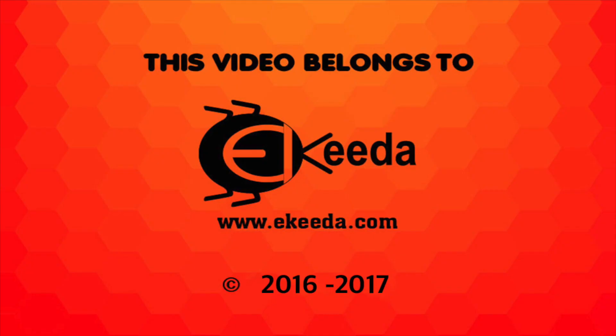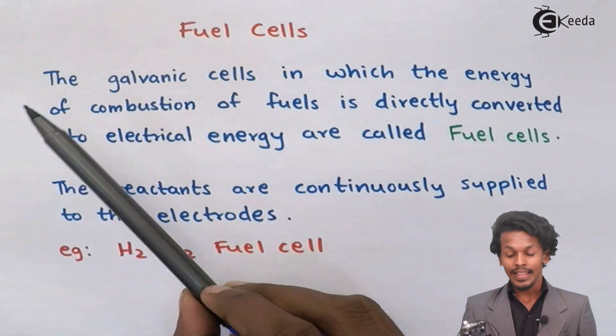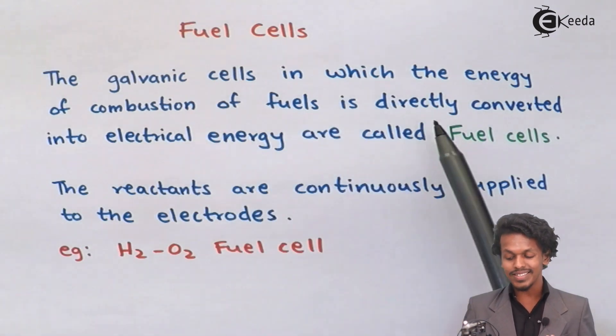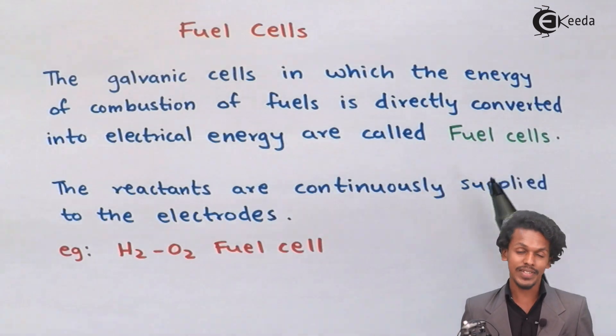We are going to talk about a galvanic cell of a different kind, known as a fuel cell, in which fuels are used to produce a chemical reaction that can eventually create electricity. The galvanic cell in which the energy of combustion of fuel is directly converted into electrical energy is called a fuel cell.